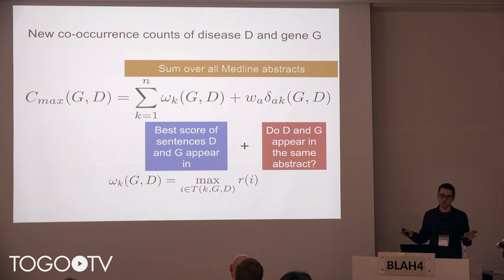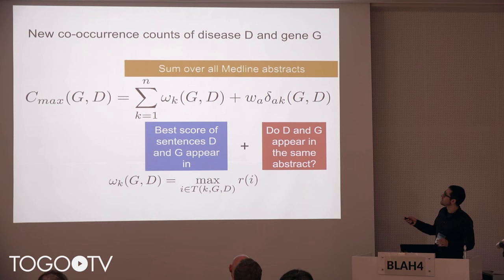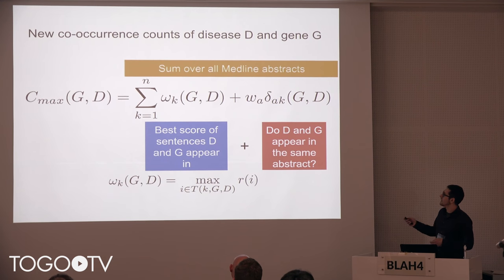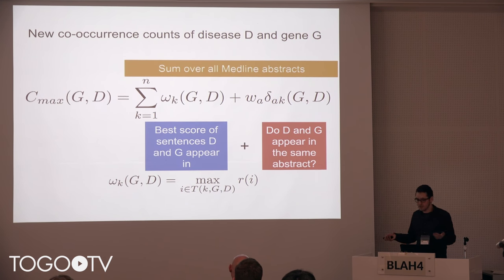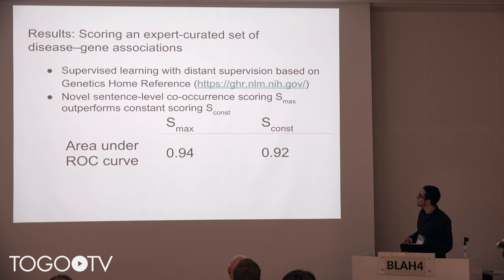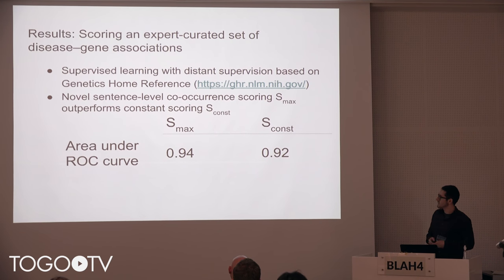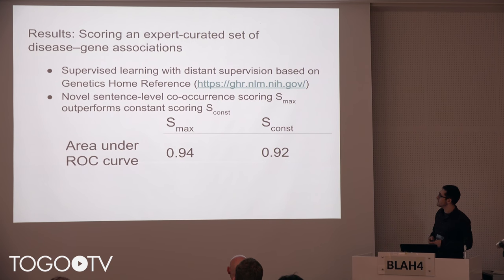This could be extended in the future — for instance, by also replacing the document-level constant term with a document-specific score. That's something we could work on during the hackathon days. Comparing this new scoring model, which looks at sentence content, to the previous model that only uses constant scores, we see that we do a little bit better.